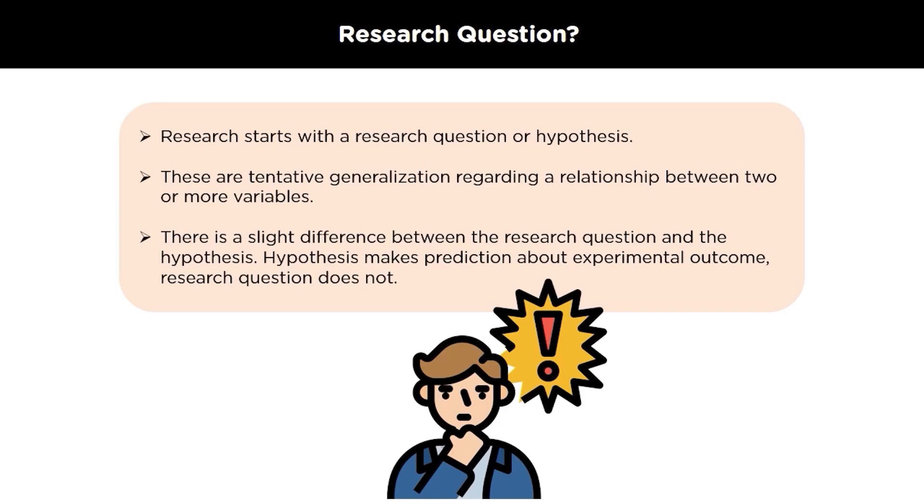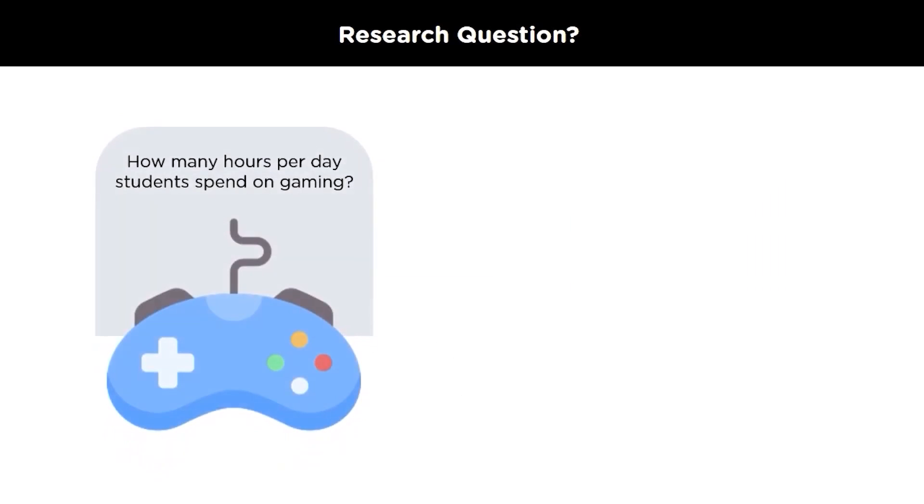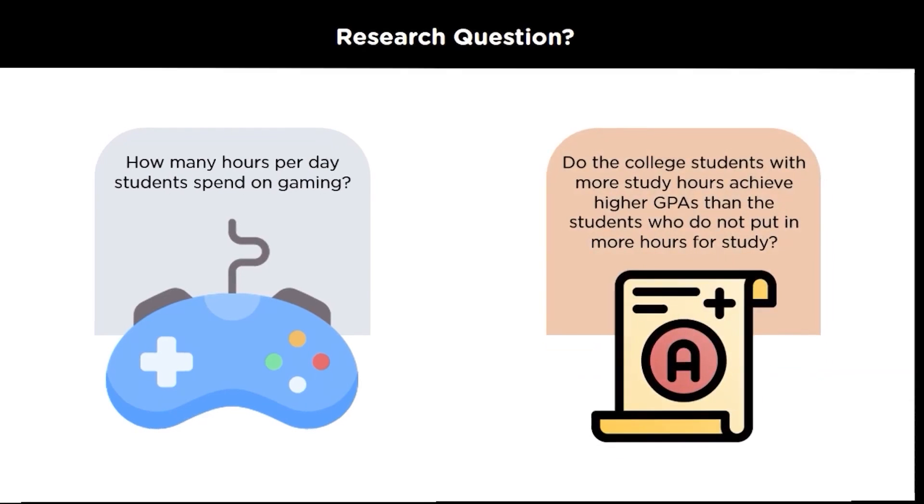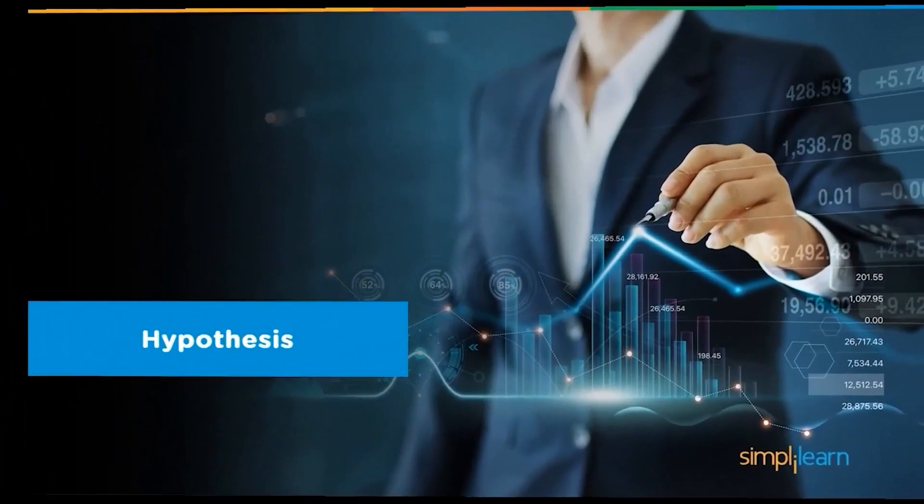When you narrow down on a research problem to a specific idea that points towards a feasible way to investigate or address the research problems, we will get to research question. Now what you should really take care of is there is a slight difference between the research question and the hypothesis. Hypothesis makes prediction about an experimental outcome whereas research question does not. Let's understand with the help of an example. Suppose your research question is how many hours per day a student spends on gaming and you want the answer for that. Another research question may be do the college students with more study hours achieve the higher GPA than the students who do not put in four hours for study?